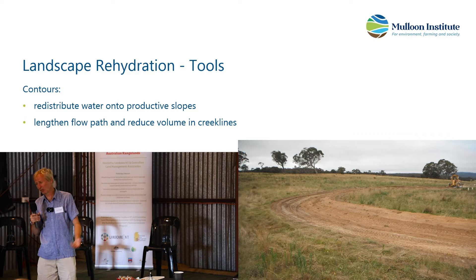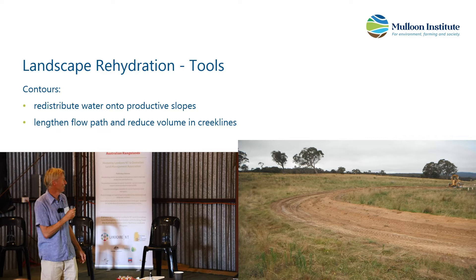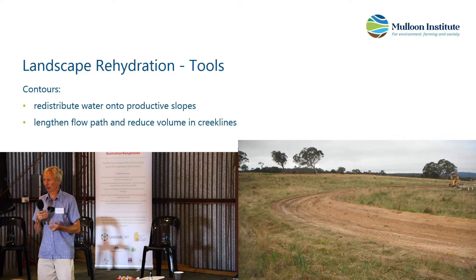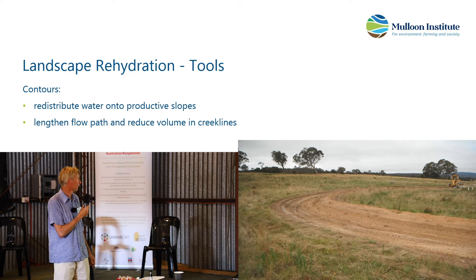The main thing I was here to talk about is contours. It's a way of distributing the water, lengthening the flow path, and reducing the volume of water in the creek lines — so effectively reducing the volume in the main waterways.